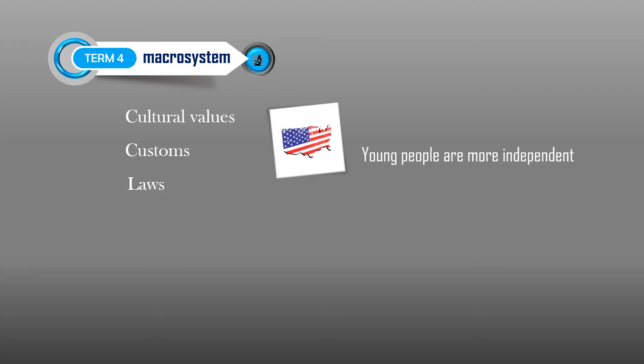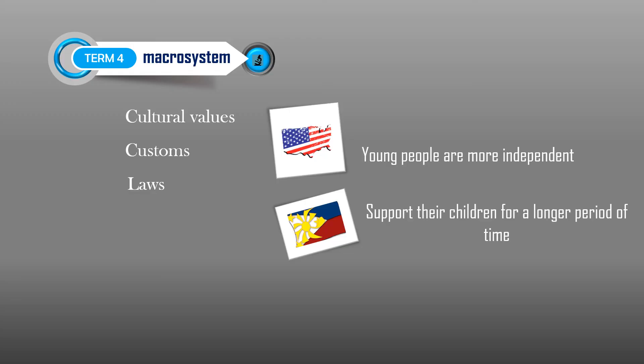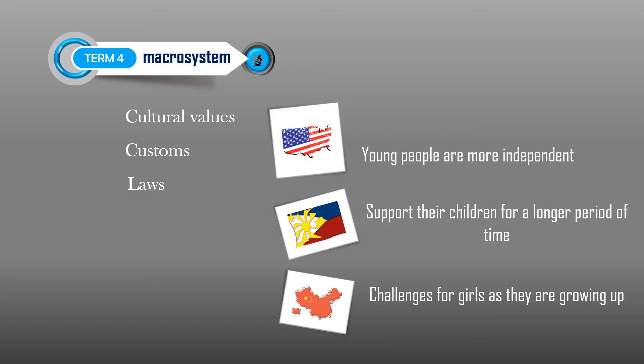The Macrosystem. This layer is found in the outermost part of the child's environment. The macrosystem includes the cultural values, customs, and laws. The belief system contained in one's macrosystem permeates all the interactions in the other layers and reaches the individual. For example, in Western countries like the U.S., most young people are expected to be more independent by the time they end their teenage years, while in Asian countries like ours, parents are expected to support or at least want to support their children for a longer period of time. It is not uncommon to see even married children still living with their parents. In China, and also in other parts of the world, sons are more valued than daughters. This may pose challenges for girls as they are growing up. Because of differences in beliefs and customs, children from different parts of the world experience different child-rearing practices, and therefore differences in development as well.